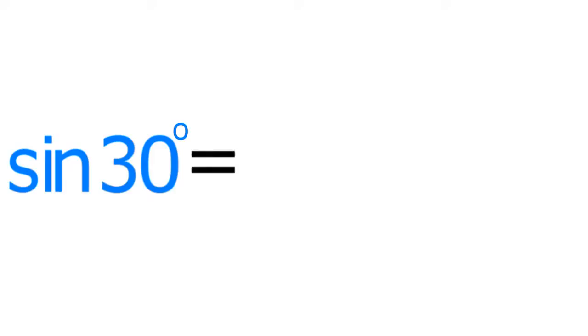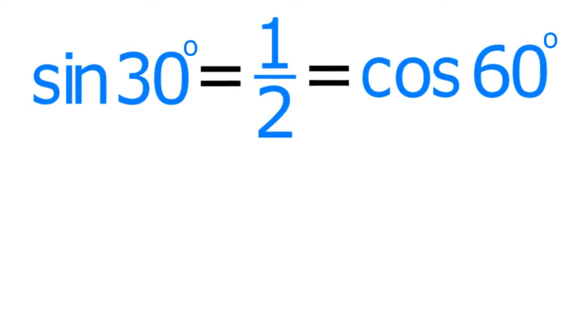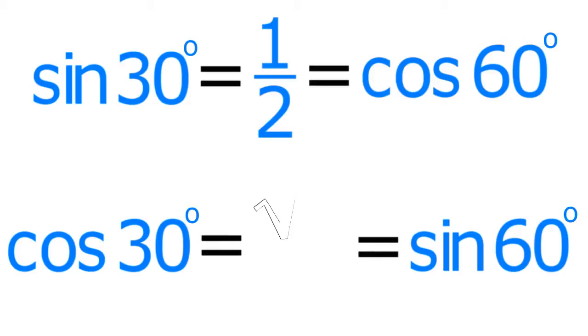For example, the sine of 30 degrees and the cosine of 60 degrees both equal 1 half. Similarly, the cosine of 30 degrees and the sine of 60 degrees both equal radical 3 over 2.